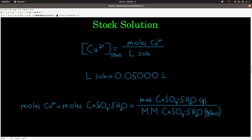The copper 2 ion came from copper 2 sulfate pentahydrate, and in one mole of copper 2 sulfate pentahydrate there is one mole of copper 2 ion. This also dissolves in water into the copper 2 ion, the sulfate ion, and the water molecules go away. Moles of copper 2 is equal to the moles of copper 2 sulfate pentahydrate — take the mass weighed out and divide by the molar mass of copper 2 sulfate pentahydrate. Be really careful to include the five waters. That gives you moles of copper 2 sulfate pentahydrate, which equals moles of copper 2. Divide by 0.05000 liters and you have the concentration of copper 2 ion in your stock solution.